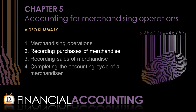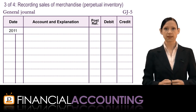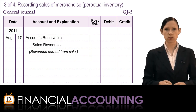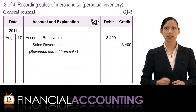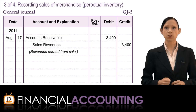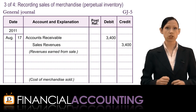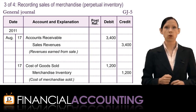Now that we know how to record purchases, the next step is to record sales of merchandise to customers. Under the perpetual inventory system, there are two journal entries for every sale. The first records revenues earned by debiting cash or accounts receivable and crediting sales revenues — using the actual amount charged after any trade discount. The second entry, specific to the perpetual system, debits cost of goods sold and credits merchandise inventory for the cost of the inventory sold, recording the reduction in inventory held.